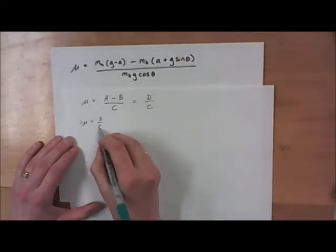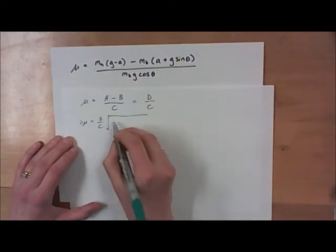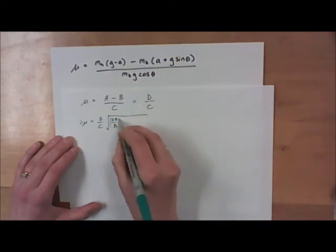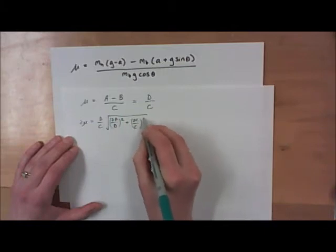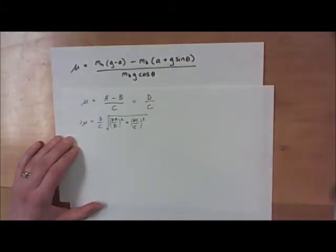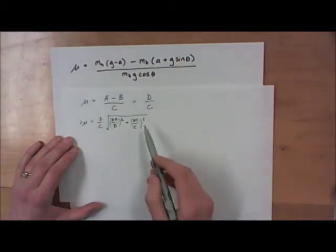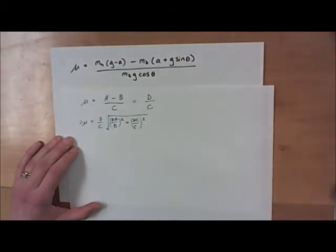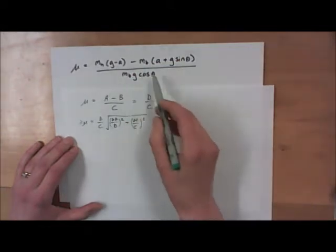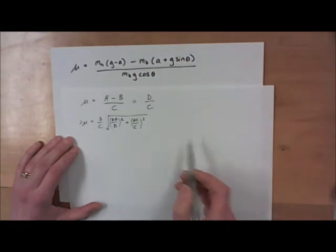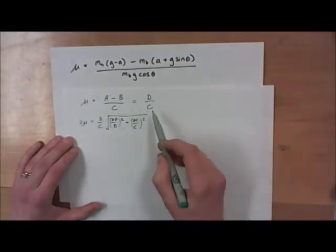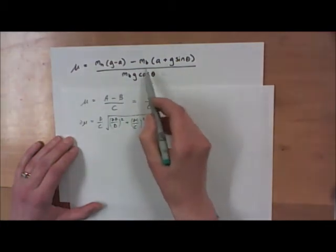So I can write out the uncertainty of my kinetic coefficient of friction by applying the multiplication/division rule: it'll be D over C, square root of the fractional uncertainty of D squared plus the fractional uncertainty of C squared. This isn't the final expression, obviously, because A, B, C, and D are all fairly complicated things. So our next step is to take a more complicated expression, find the uncertainty of it, and nest it inside these simplified expressions. I'm going to start by doing this for C.